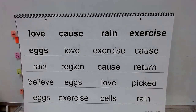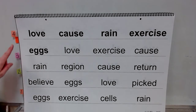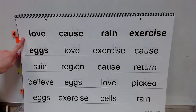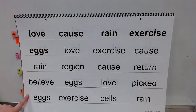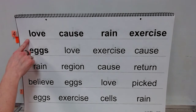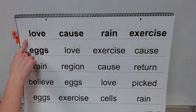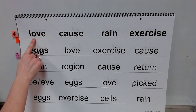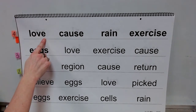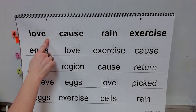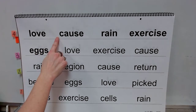This is Grade 3, Unit 5, Lesson 24, Day 1. You're going to read, spell, and read five new high-frequency words, then read the rest of the words. This word is love. What word? Spell love. Word. Yes, love.